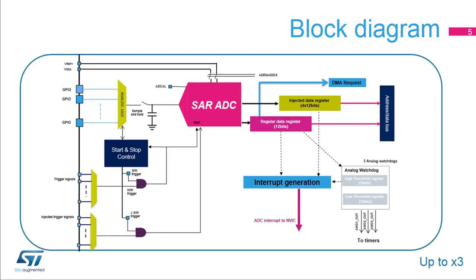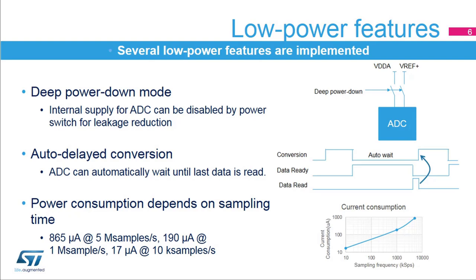This slide shows the general block diagram for analog to digital converters embedded in the STM32L4. The STM32L4's ADCs support a deep power down mode — when the ADC is not used, it can be disconnected by a power switch to further reduce leakage current. Auto-delayed mode makes the ADC wait until the last conversion data is read before starting the next conversion, avoiding unnecessary conversions and thus reducing power consumption. The power consumption is a function of the sampling frequency; for low sampling rates, the current consumption is reduced almost proportionally.